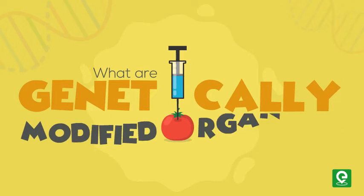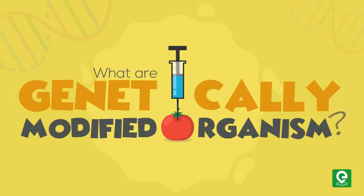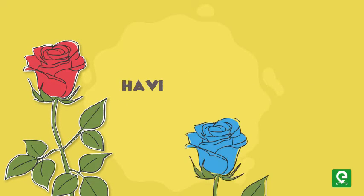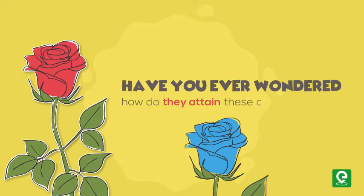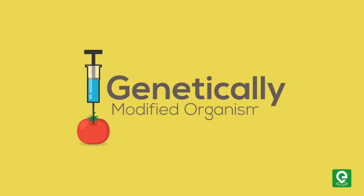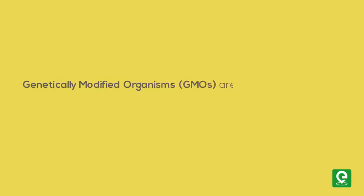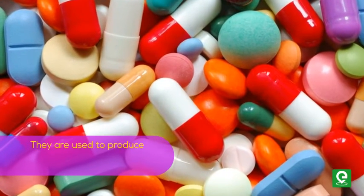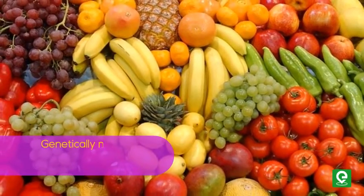What are genetically modified organisms? Have you ever wondered how roses attain different colors? In this video, we will study about genetically modified organisms. GMOs are any organism whose genetic material has been altered using genetic engineering techniques. They are used to produce medicines, genetically modified food, and in scientific research.